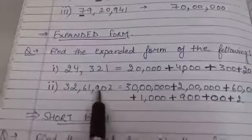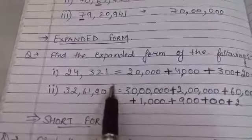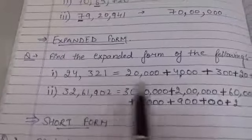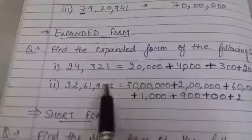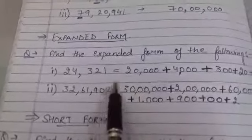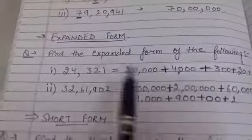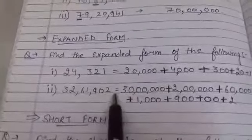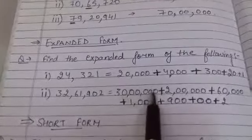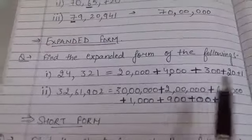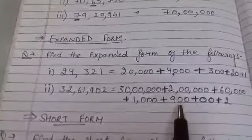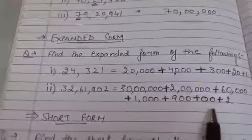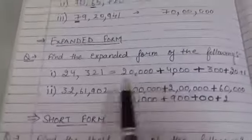The next number is 0. The 0 number it will be 1s, 10s. So, we will be adding 0, 0, 1s and 10s. Next number is just 2. So, we will be adding 2. So, the expanded form of this number will be 30 lakhs plus 2 lakhs plus 60,000 plus 1,000 plus 900 plus 0, 0 plus 2.